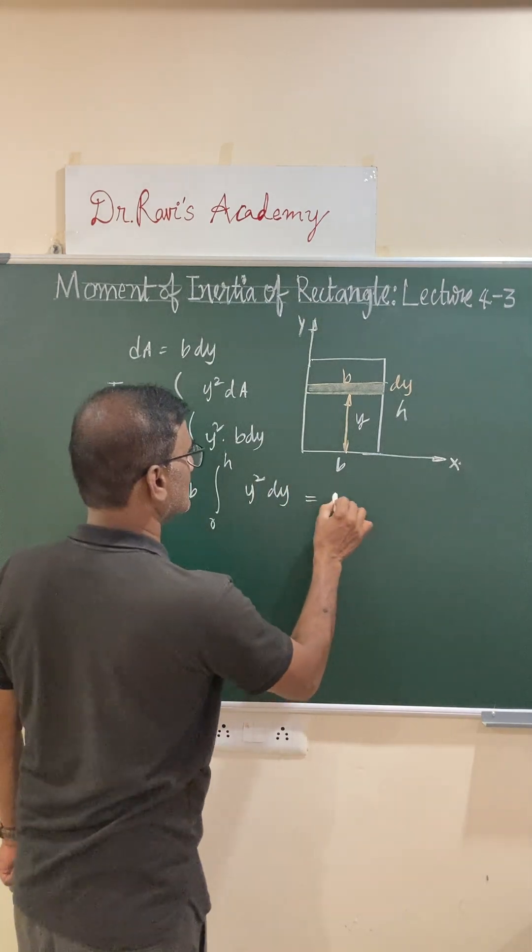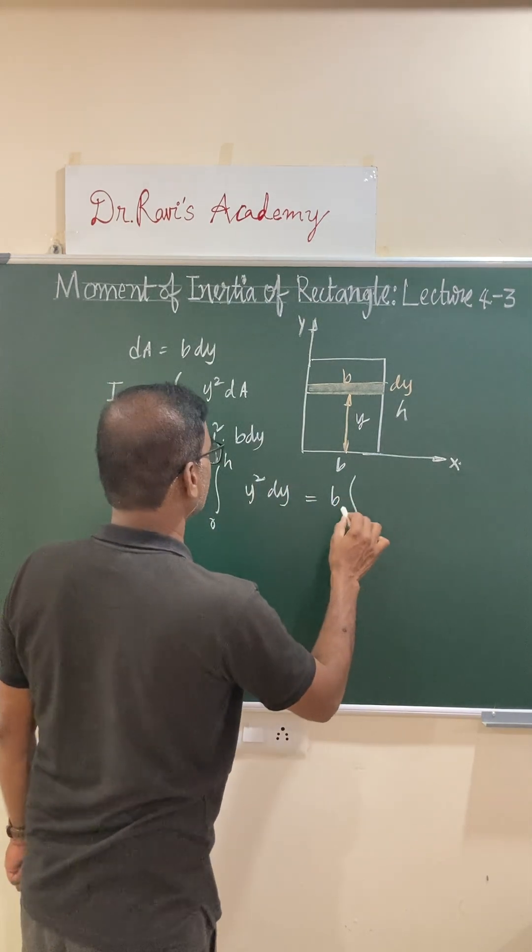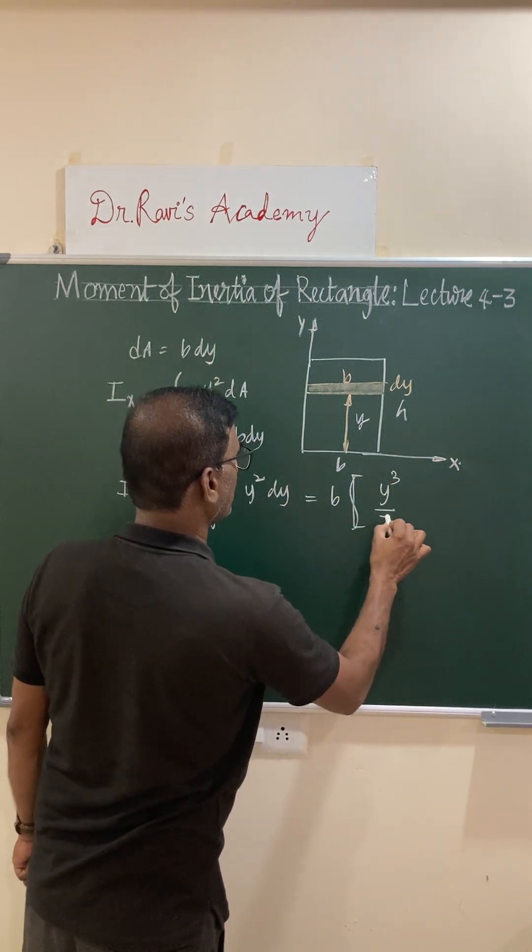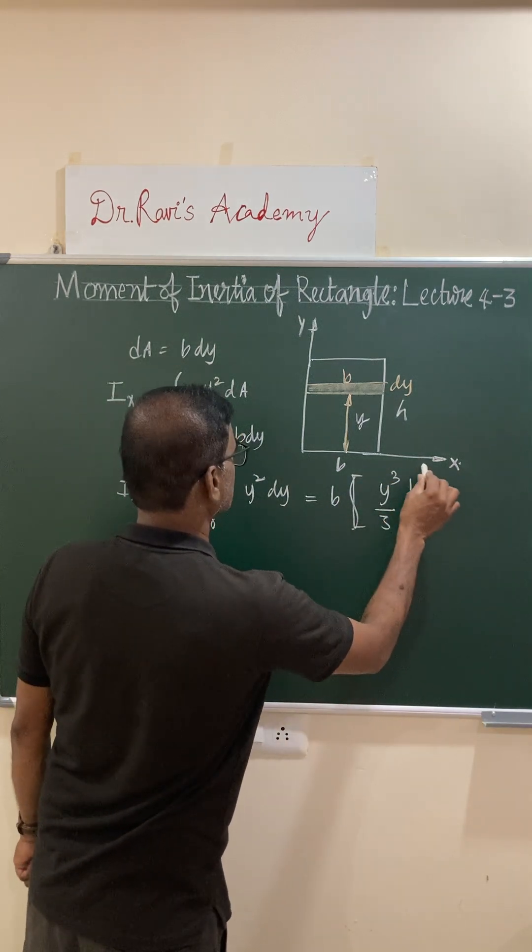This becomes b times the integral of y cubed, which is y cubed by 3, and you can substitute the limits.